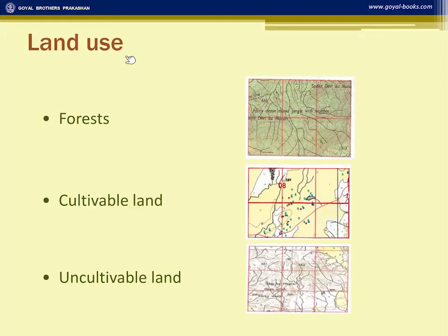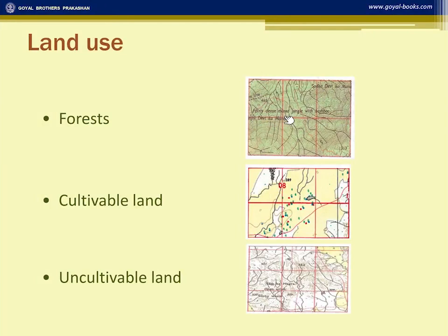Now we come to land use. In the survey sheet, some areas are shown in green, some in yellow, and some in white. Forests are generally shown in green with a description written on top — for example, 'fairly dense mixed jungle with bamboo,' 'open mixed jungle,' or 'dense forest.' If a question asks what type of forests are found, you simply state what is written there. In this case, it is written 'fairly dense mixed jungle with bamboo.'